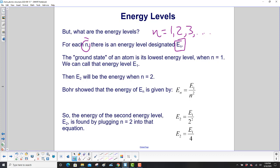There is an energy level designated E sub n. The ground state of an atom is its lowest energy level, where n is equal to 1. And we will call that E sub 1. Then E sub 2 will be the next energy level. That's when n is equal to 2.